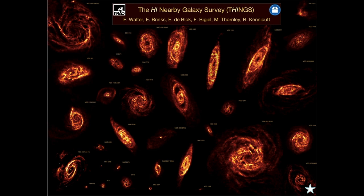This group led by Walter Brinks, by Bigiel, Thornley, and Kennicutt, made a survey of nearby galaxies and looked at their H1, or their neutral hydrogen, in 21 centimeters. We can definitely see the spiral structures. But there's also some mixy sort of things to them, just like we saw with the Milky Way.